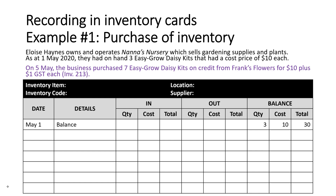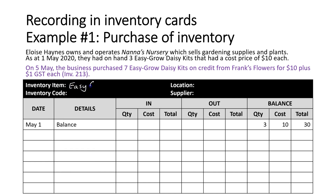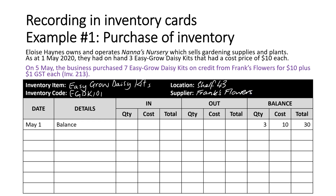We're going to look at six different examples of transactions to be recorded in the same inventory card. We have an inventory card for Easy Grow Daisy Kits. This would normally be pre-filled for you, but we'll note that it is stored on Shelf 43 and our supplier is Frank's Flowers.